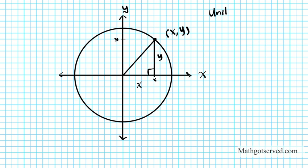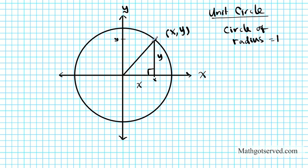I told you this is a unit circle. What does that mean? It means a circle of radius 1. So if this is a circle of radius 1, any point from the center to the edge of the circle is going to be 1. So the hypotenuse here is 1. Now we need a reference angle, because that is what we will use to construct our trig ratios. The reference angle here is theta.